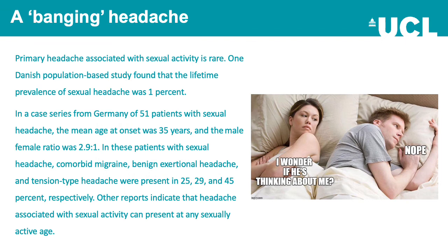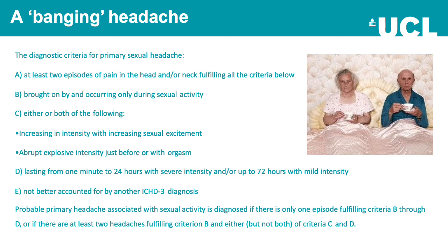Primary headache associated with sexual activity is rare. One Danish population-based study found a lifetime prevalence of about one percent. In a German case series of 51 patients with sexual headache, the mean age at onset was 35 and the male-to-female ratio was about 2.9 to 1. Comorbid migraine, benign exertional headache, and tension-type headaches were present in 25, 29, and 45 percent respectively. Other reports indicate that sexual headache can present at any age. Diagnostic criteria for primary sexual headache are listed in the relevant slide.